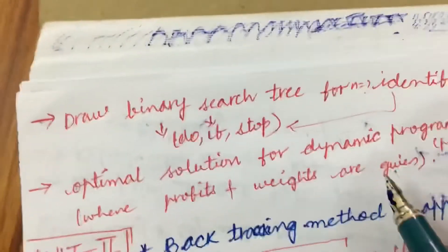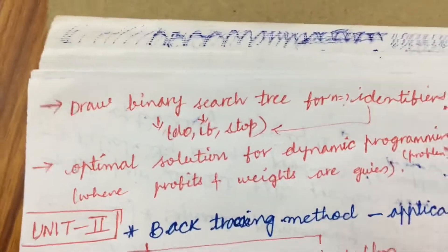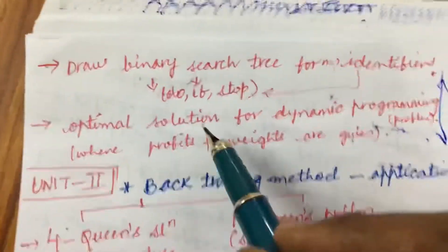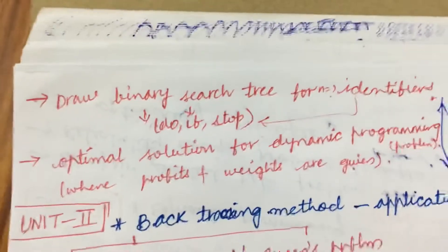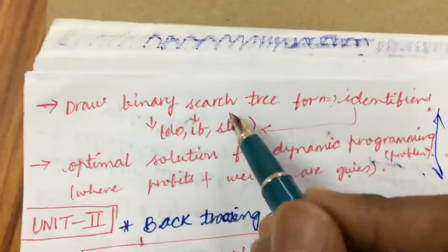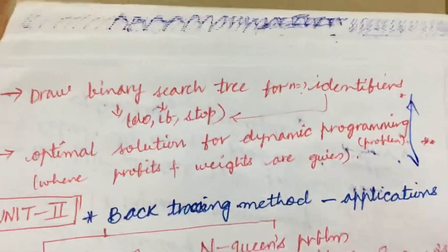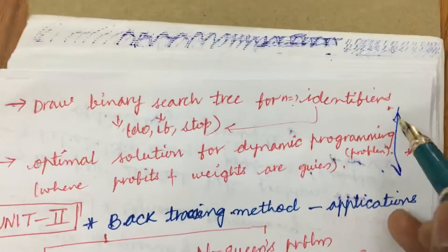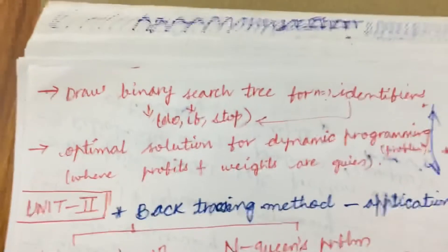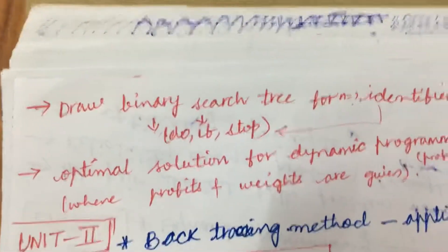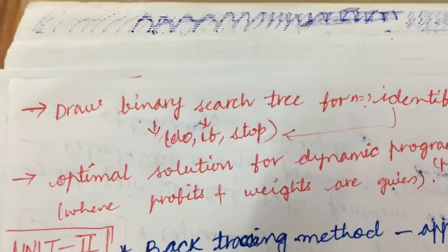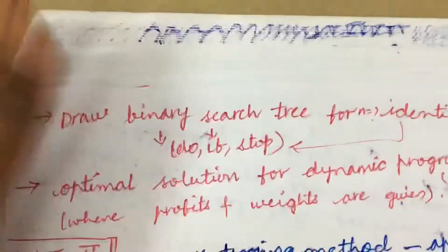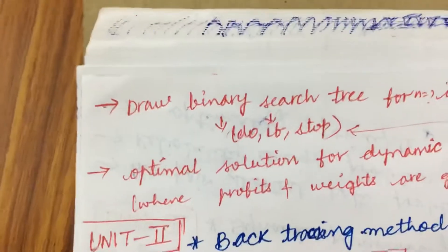From Unit 3 you are going to get two questions — the first question is from those three topics, and one more question related to drawing a Binary Search Tree for identifiers like 'do', 'if', and 'stop', as well as the optimal solution for Dynamic Programming where profits and weights are given. Make sure that from Unit 3 you are going to get one theory question as well as one problem, and you can expect a combination of 7 and 8 marks, or a 10 and 5 split.